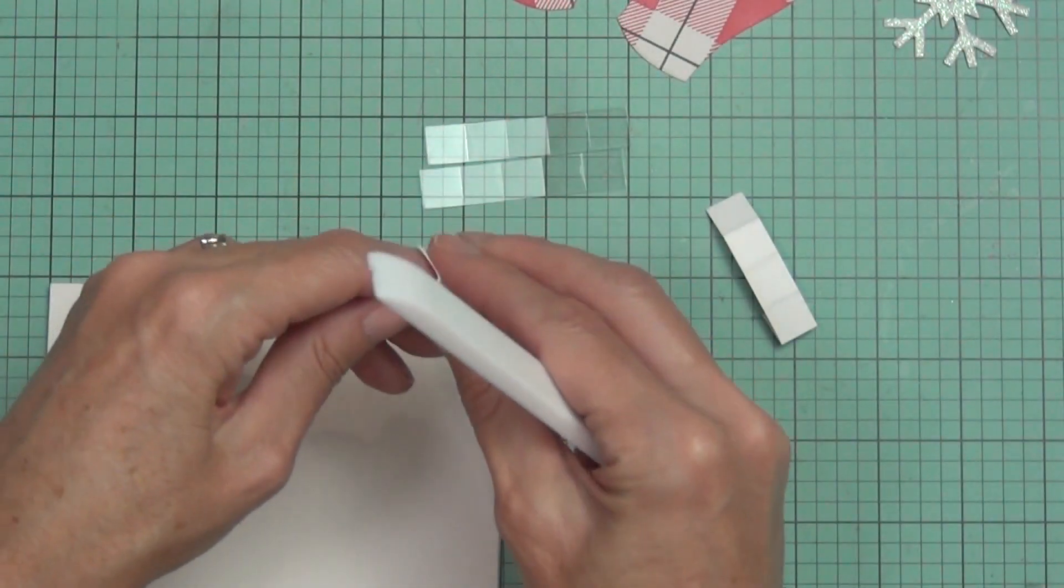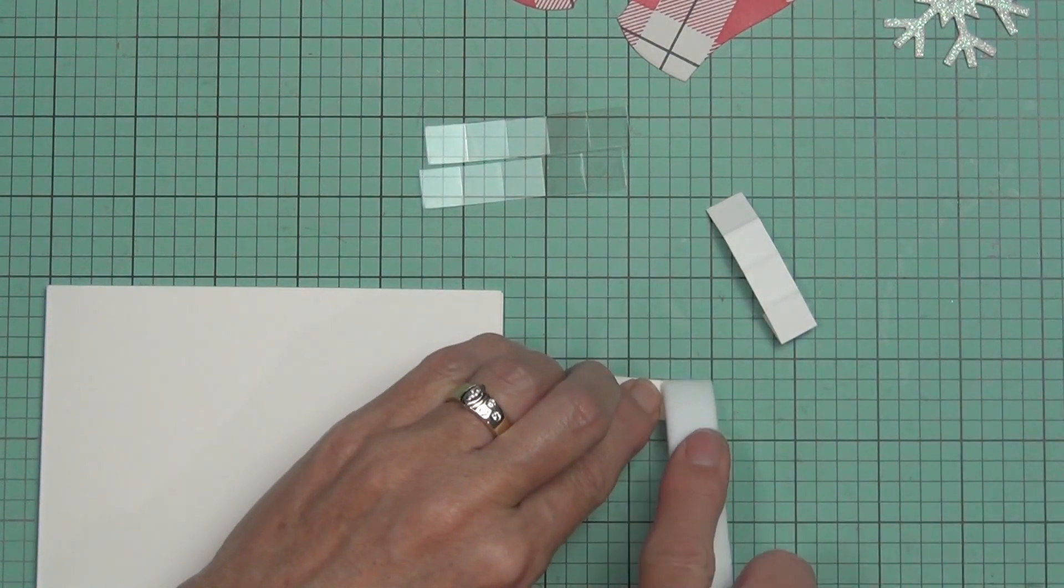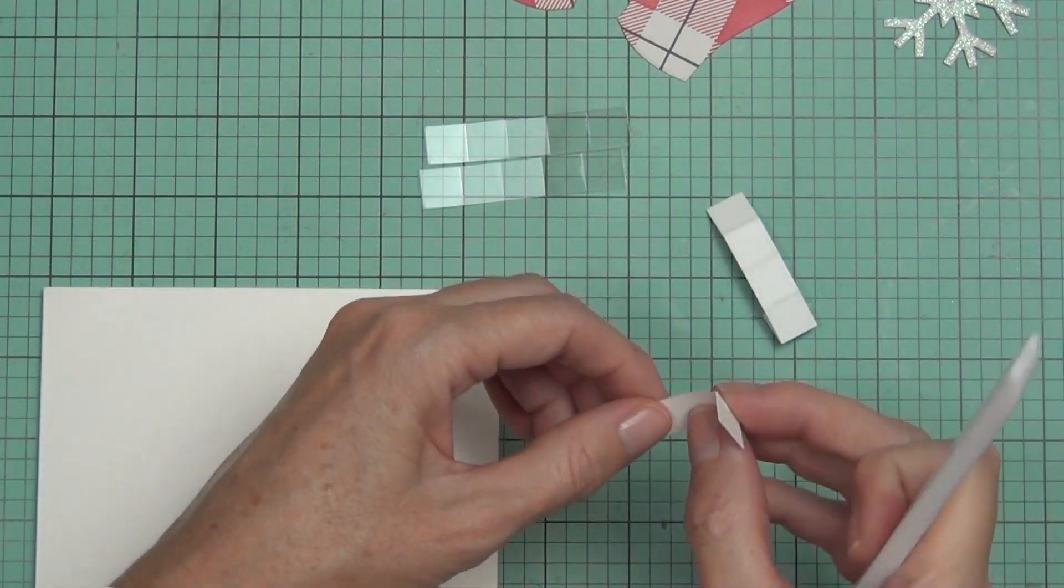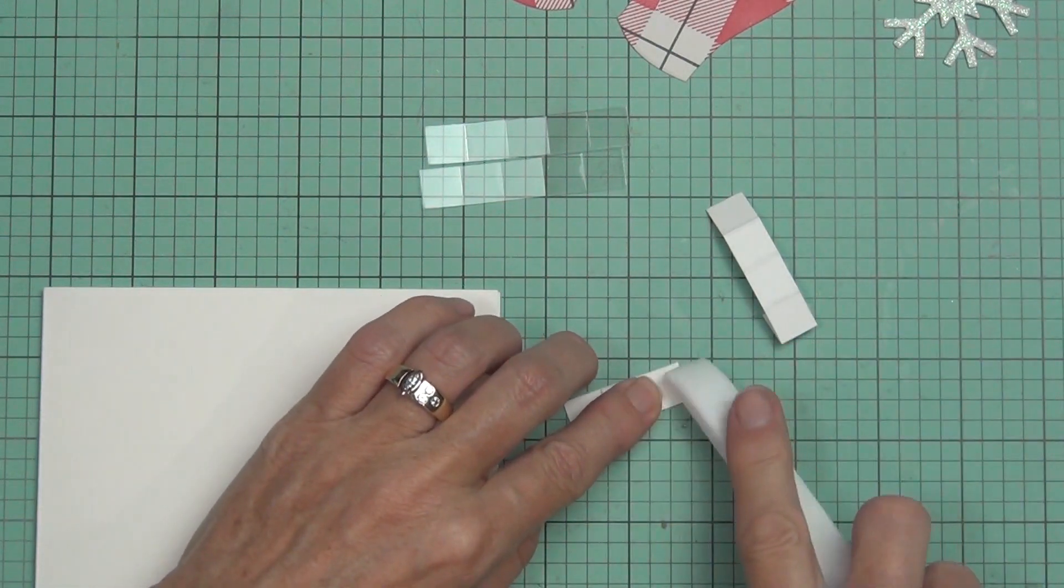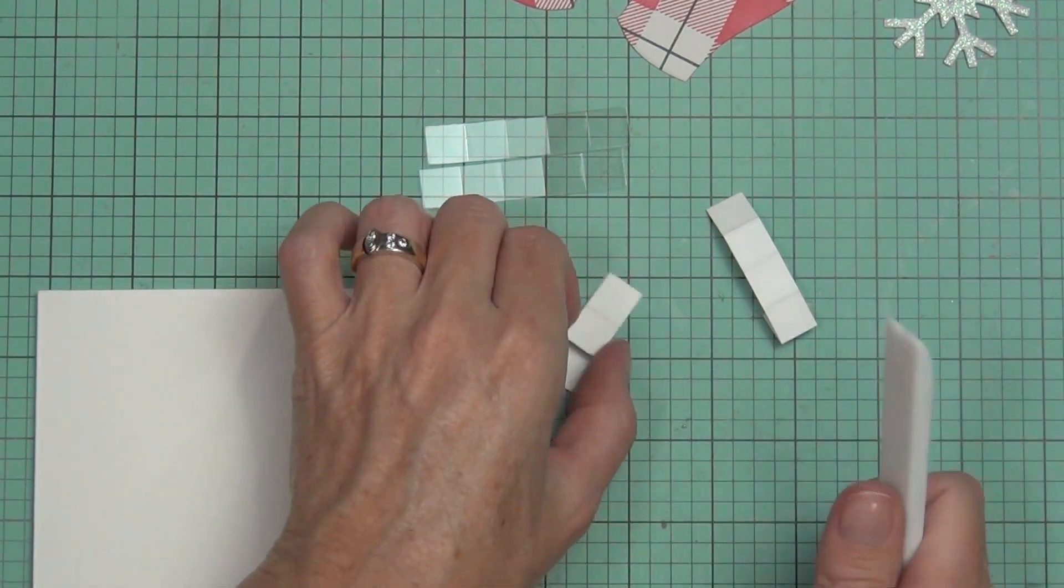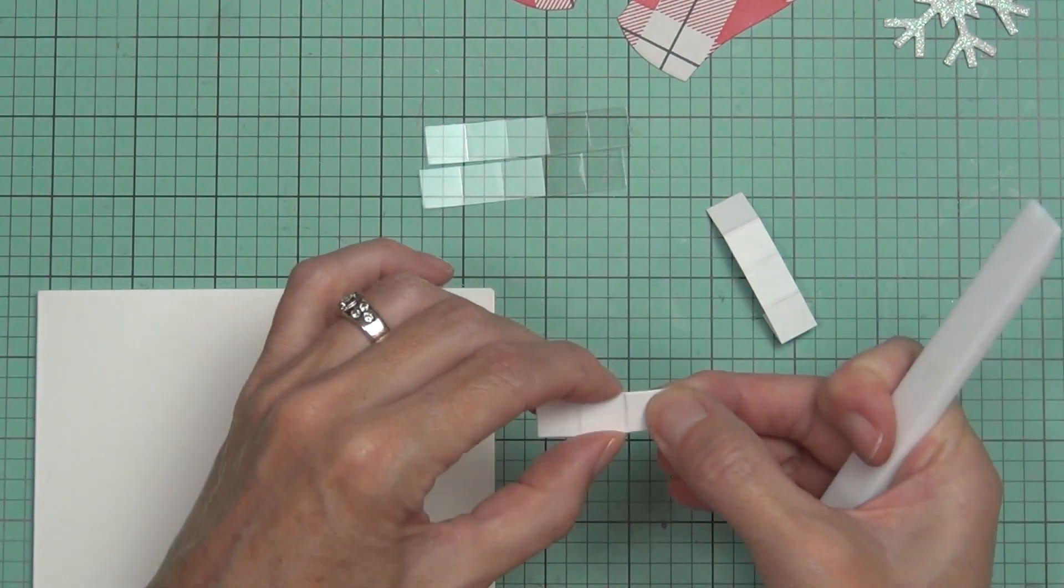What I would have done was use the thinner one, which I'll link on my blog, and that cuts really easily, and then cut some normal cardstock and adhere them together. But because I had the thicker stuff, I thought I'd give it a try. But it actually cut it really well—I was impressed.